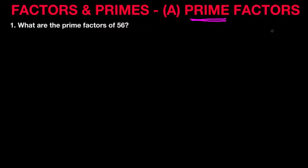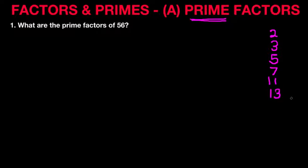A prime number is a number which is only divisible by itself and the number one. So the first prime number is 2, after that is 3, 5. Now 4 is not a prime number because 2 times 2 equals 4. Then 7, 11, 13, and we can keep going on and on, but we'll just need these for the first example.